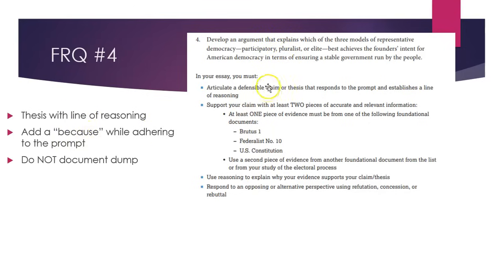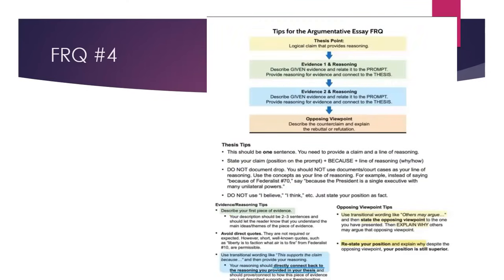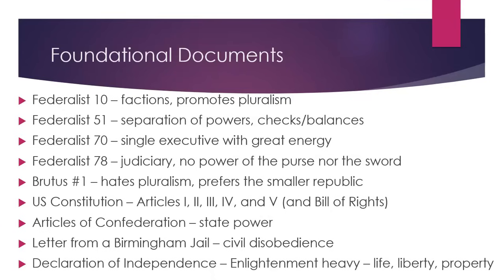You cannot just say, for example, that the pluralist theory is the best example because of Brutus 1 and Federalist 10. You want to avoid document dumping and instead have a clear line of reasoning. Have some type of line of reasoning, and then the evidence coming from the foundational documents and other information that you've studied here, not to mention the opposing viewpoint. You should also be very familiar with these foundational documents as they will appear in multiple choice format as well as the FRQ 4 argumentative essay.